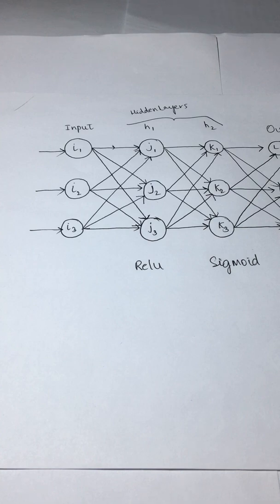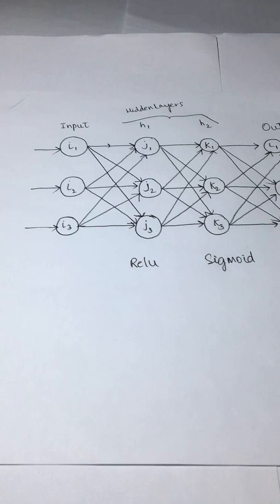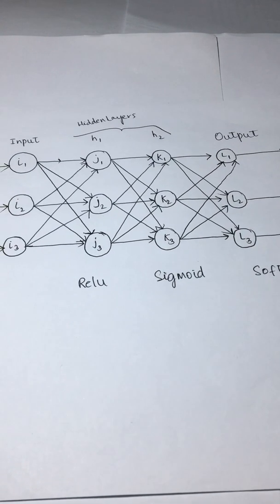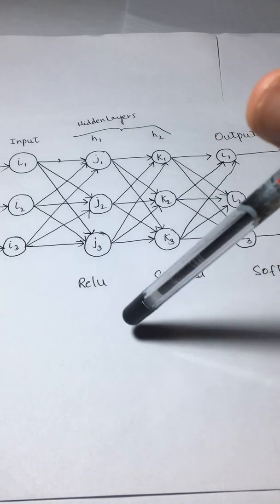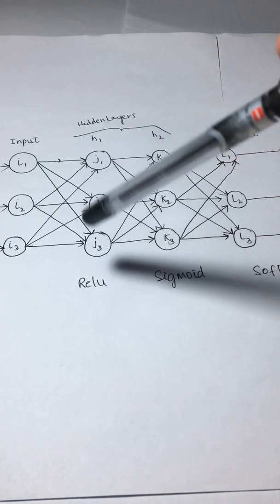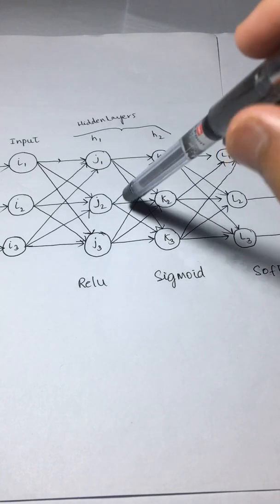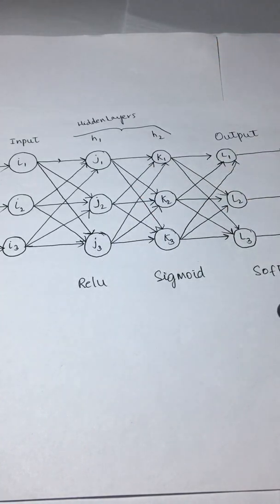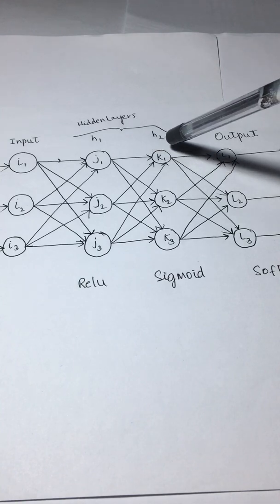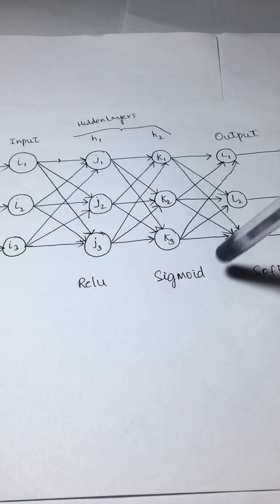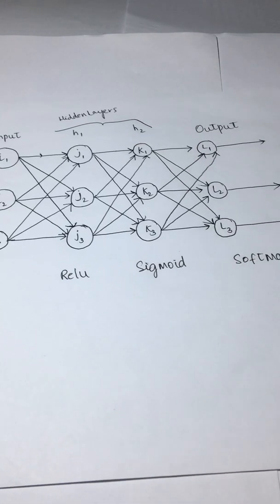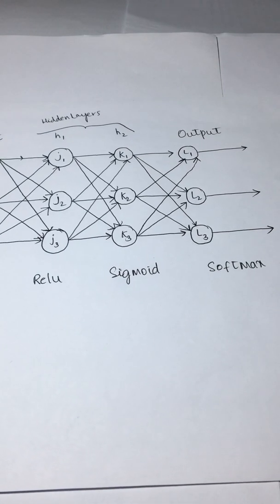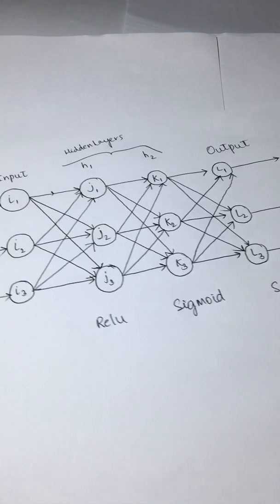The other weights as well will be randomly initialized. We will consider the same network architecture. For this particular hidden layer H1, you have ReLU as your activation function. For your hidden layer H2, you have sigmoid as your activation function. And your output is basically your softmax layer.